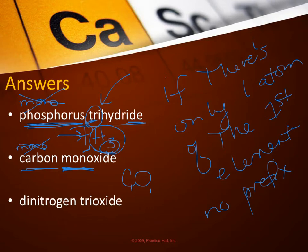Dinitrogen trioxide. If both elements have more than one, both need a prefix. Most people find covalent compound naming and formula writing much easier than ionic.